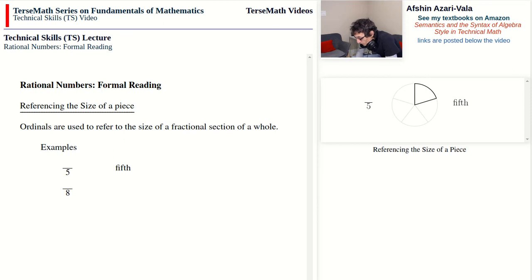If the denominator is eight, then the pie is cut into eight parts. As you can see in the diagram we have one, two, three, four, five, six, seven, and eight. In this case we refer to the size of a piece as an eighth.